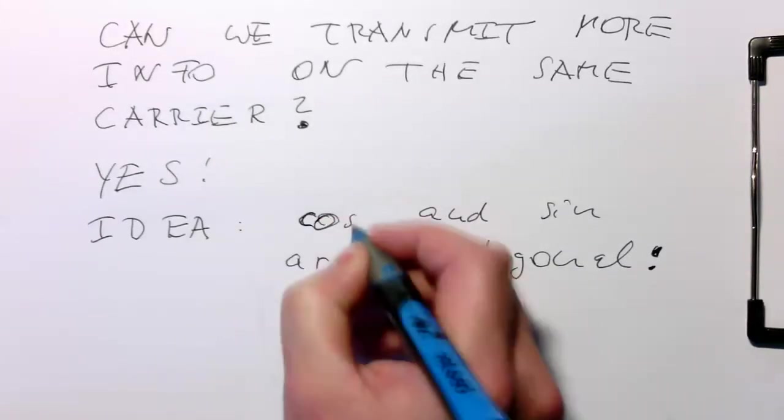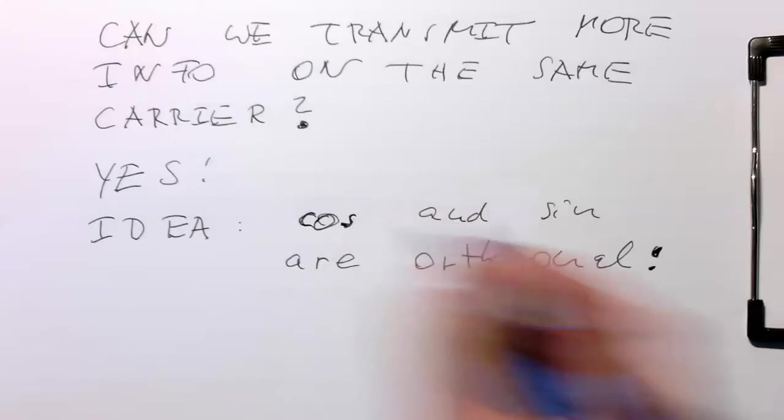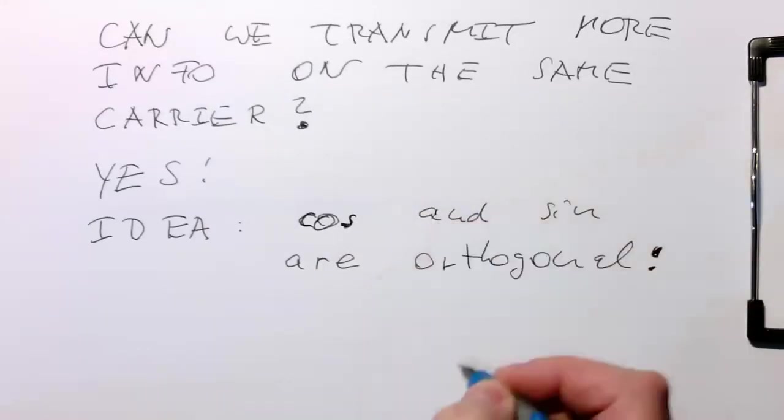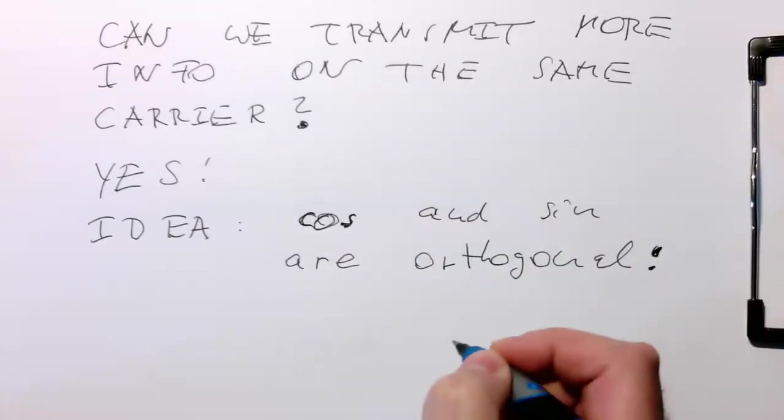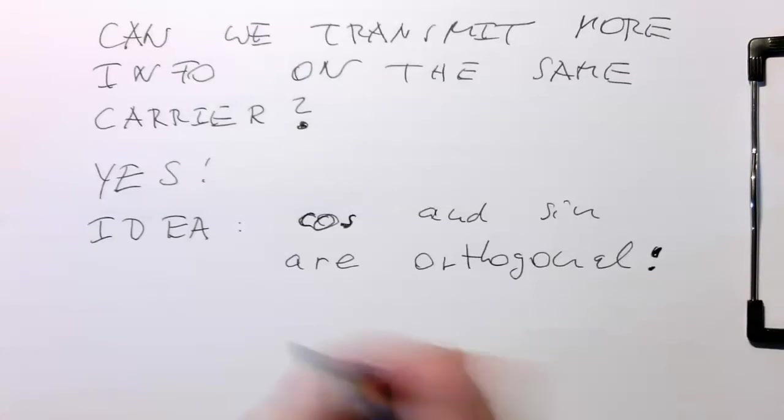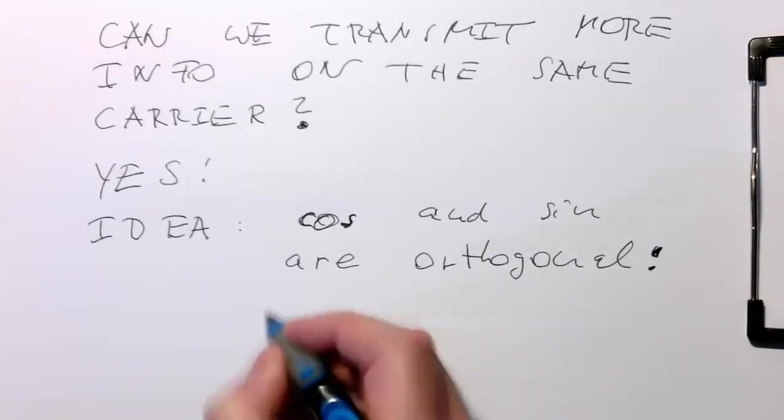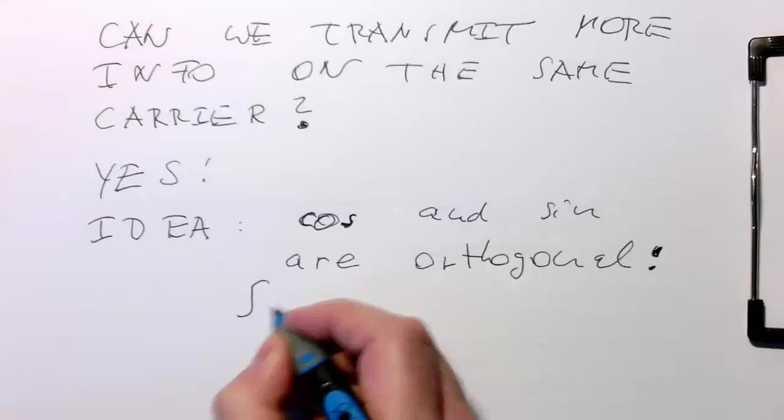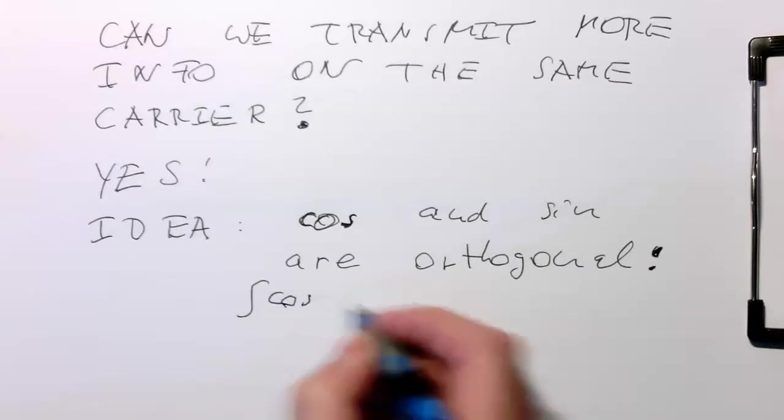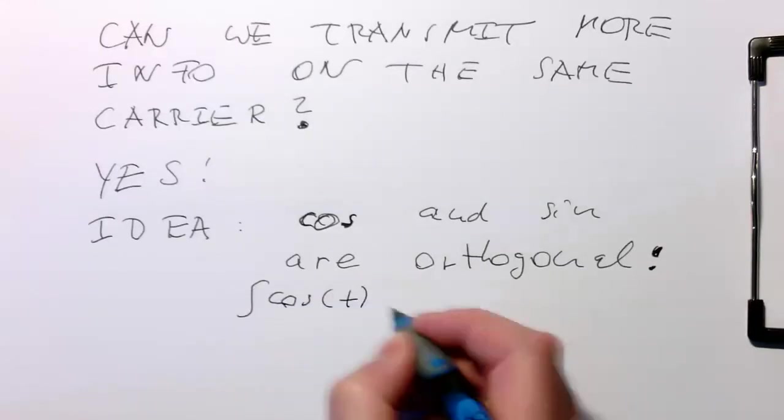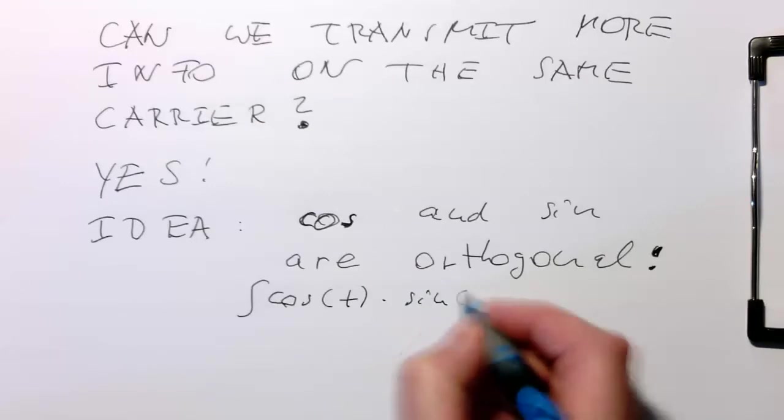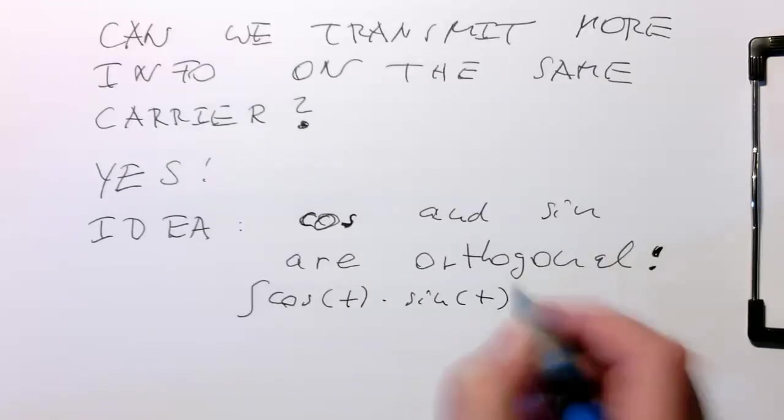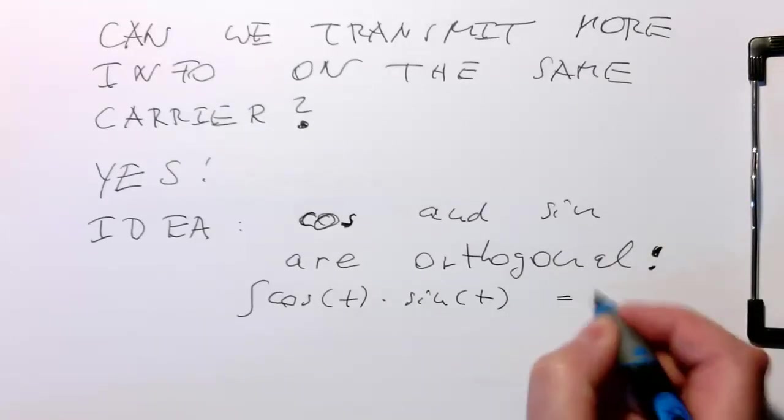So this means a cosine and a sine wave won't interfere with each other. So what means orthogonal in these terms? Orthogonal means that if I'm doing integral over cosine multiplied by sine of t, that this becomes zero.